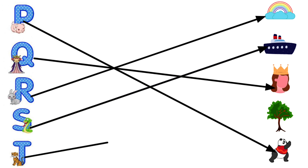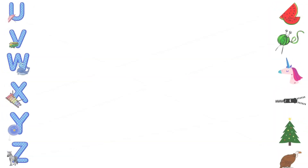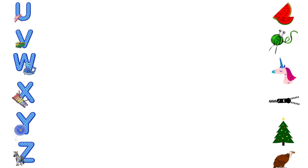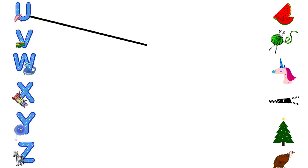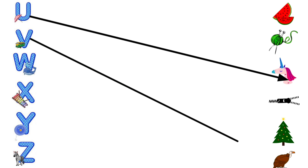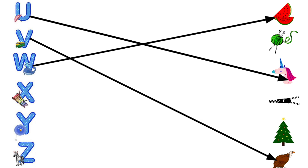T for Tree, U for Unicorn, V for Vulture, W for Watermelon.